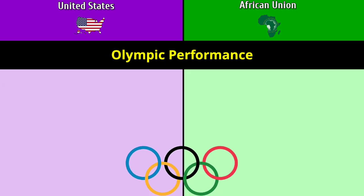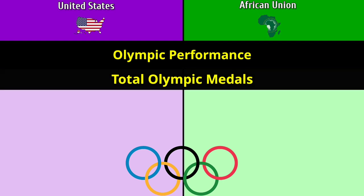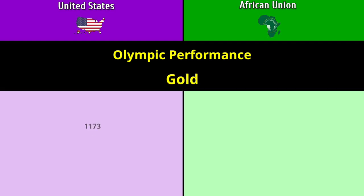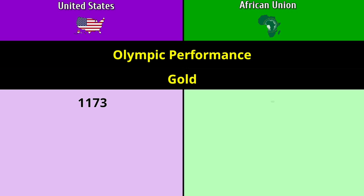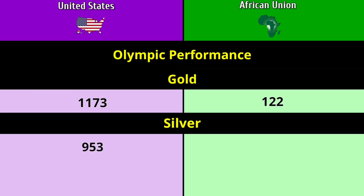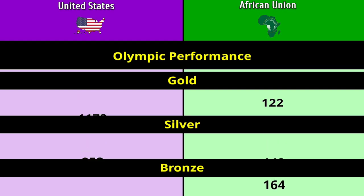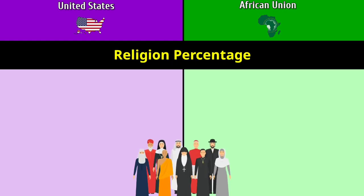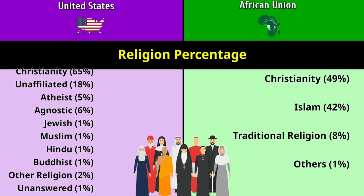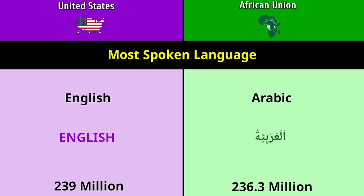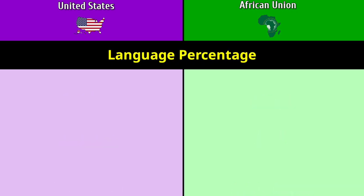Olympic performance — total Olympic medals: 2,959 versus 428. Gold: 1,173 versus 122. Silver: 953 versus 142. Bronze: 833 versus 164. Religion: Christianity dominated by both sides. Most spoken language: English at 239 million versus Arabic at 236.3 million.